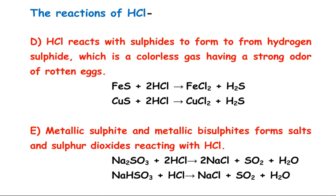The aqueous solution of HCl reacts with metal sulfides to form hydrogen sulfide — a colorless gas with the strong odor of rotten eggs. For example, FeS reacts with HCl to form FeCl2 and H2S. Metal sulfites and metallic bisulfites form salts and sulfur dioxide when reacting with HCl.